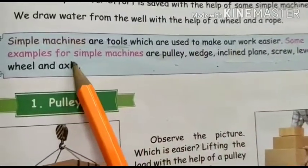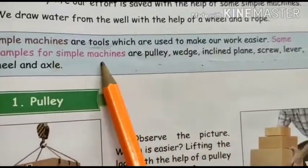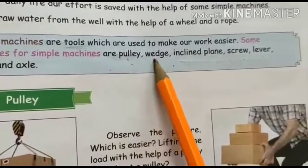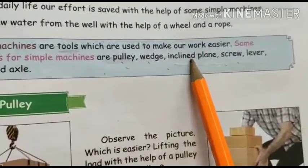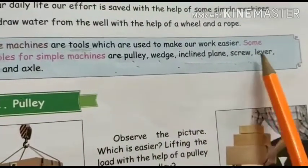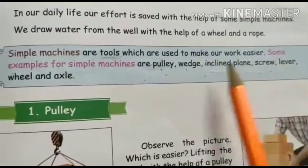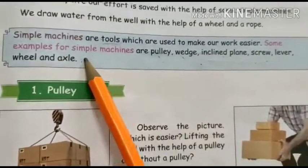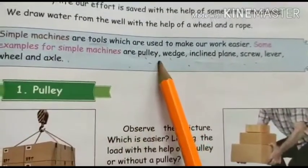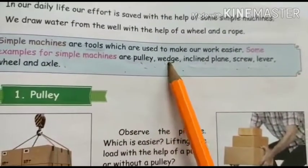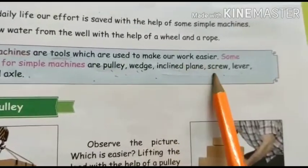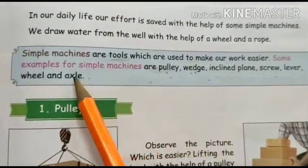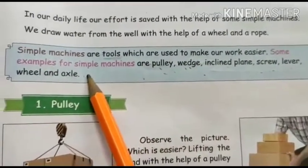Some examples of simple machines are: pulley, wedge, inclined plane, screw, lever, and wheel and axle.